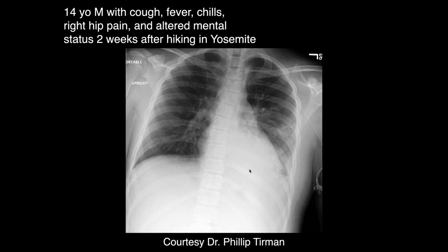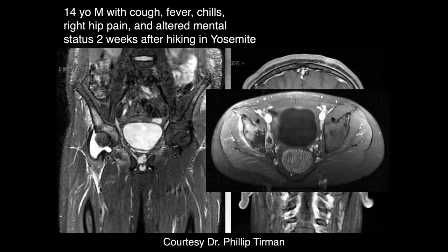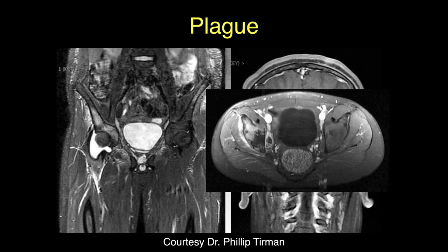A 14-year-old male with cough, fever, chills, right hip pain, and altered mental status two weeks after hiking in Yosemite. Chest X-ray shows a retrocardiac opacity and small left pleural effusion. MRI shows dural enhancement concerning for intracranial infection, right hip edema with effusion, and a small enhancing abscess medial to the acetabular rim. This is a systemic infection involving multiple organs — this was plague.